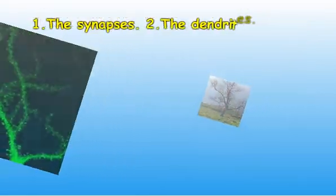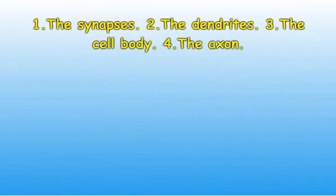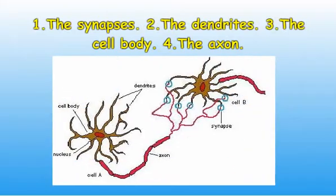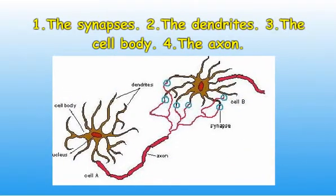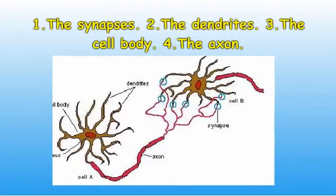In order to understand the terms in this article, some basic details are explained. There are several parts of neurons or nerve cells. These are: 1) the synapses, 2) the dendrites, 3) the cell body, and 4) the axon.